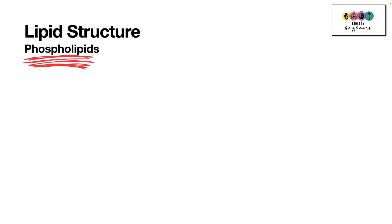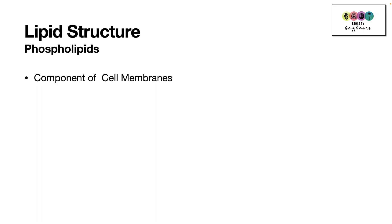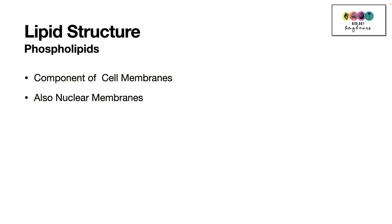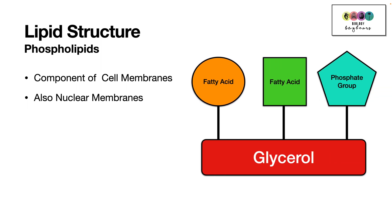Phospholipids are another type of lipid. They're very important because they are the main component or building block of cell membranes and also nuclear membranes — those membranes that surround the nucleus of cells. The structure of a phospholipid includes glycerol and two fatty acids, and instead of a third fatty acid, it has a phosphate group. It's that phosphate group which makes it the phospholipid.